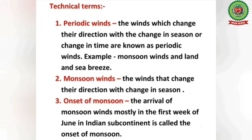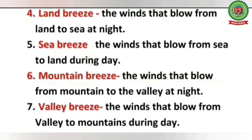Now let us go through the technical terms for today's class. The first term is periodic winds: winds which change their direction with the change in season or change in time are known as periodic winds. Examples are monsoon winds and land and sea breeze. Monsoon winds are winds that change their direction with the change in season. Onset of monsoon refers to the arrival of monsoon winds, mostly in the first week of June in the Indian subcontinent. Sea breeze is the wind that blows from sea to land during day. Mountain breeze blows from mountain to valley at night, and valley breeze blows from valley to mountain during day.